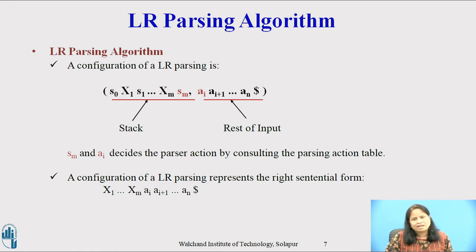A configuration of an LR parser is a pair whose first element is the stack content and whose second component is unexpanded input. S0, X1, S1 and so on up to XM, SM is the stack content. AI, AI plus 1 and so on up to AN dollar is the input. SM and AI decides the parser action by consulting the parsing action table. Initially stack contains just S0. The configuration represents the right sentential form in essentially the same way a shift-reduce parser would. Only the presence of state on the stack is new.